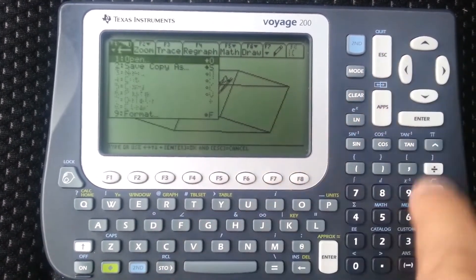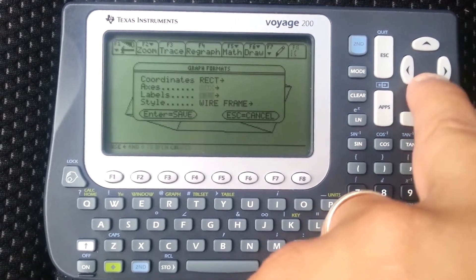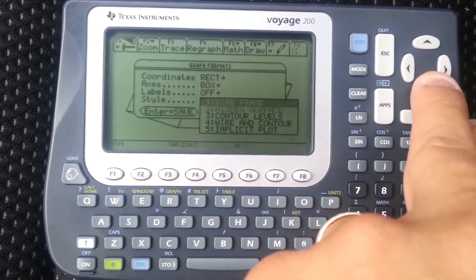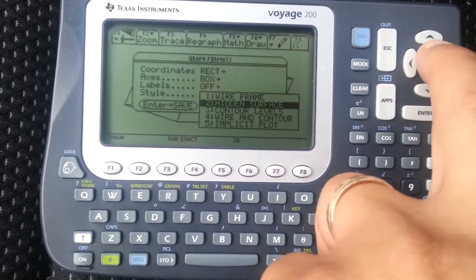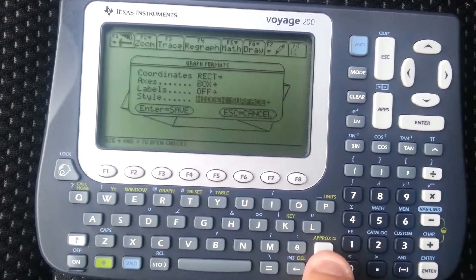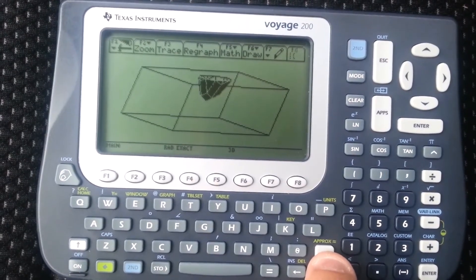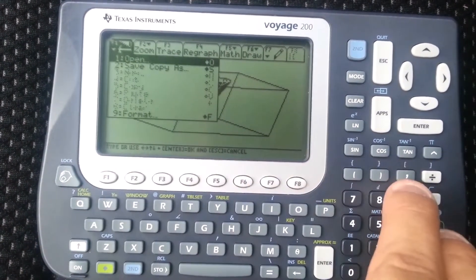And you can also change from wireframe to different types of options. I'm just going to show you the hidden surface. Let me turn off the axes actually.